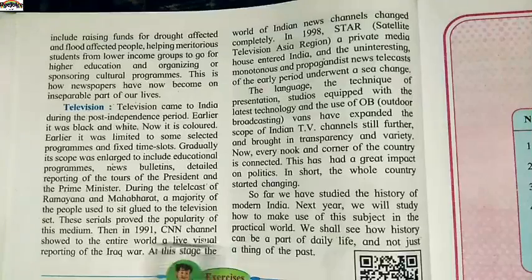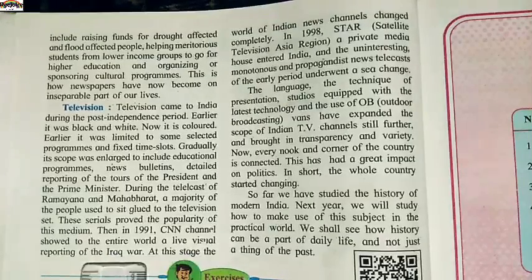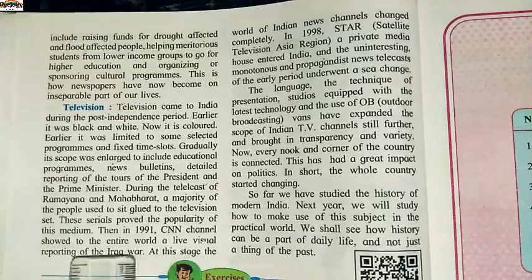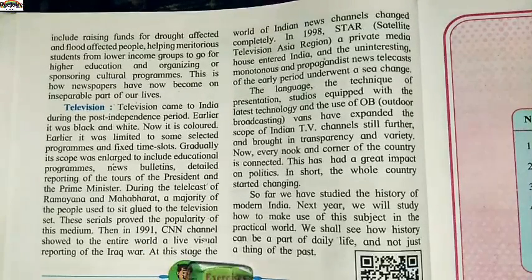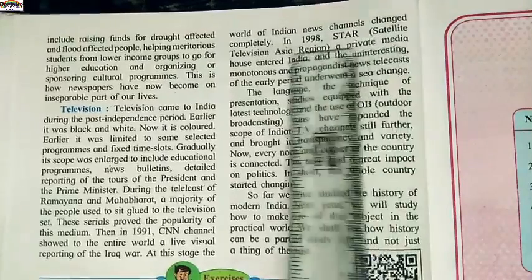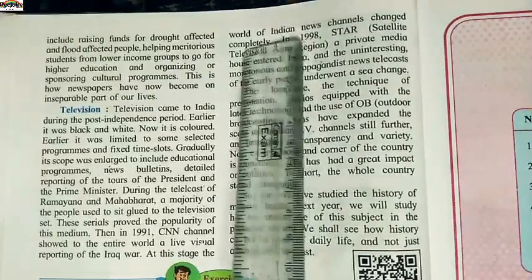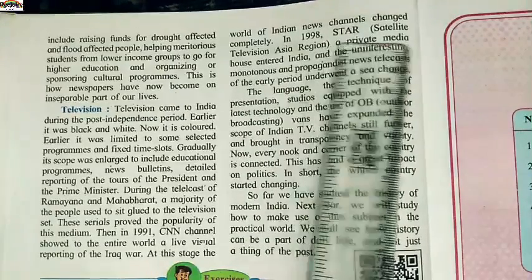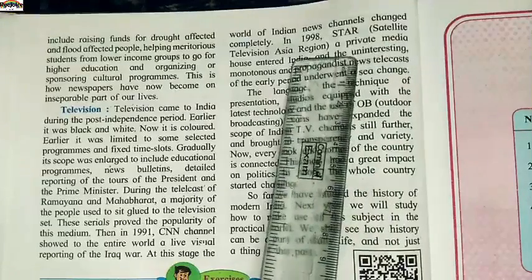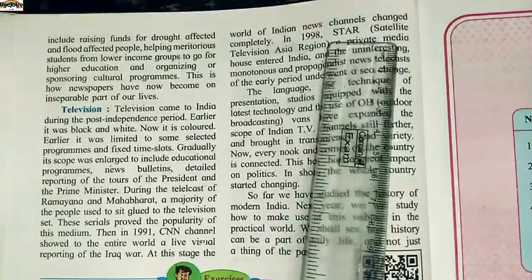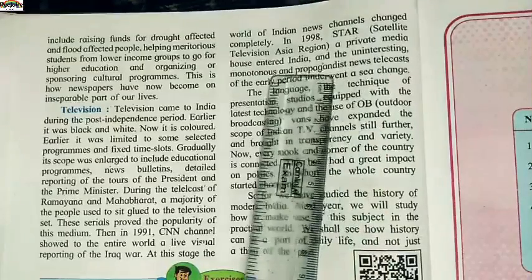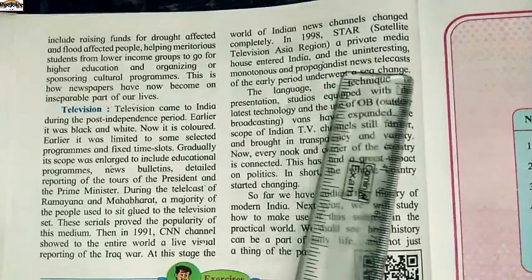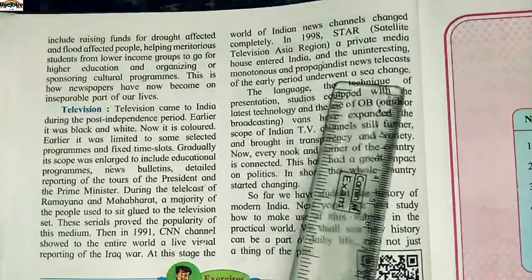Then in 1991, CNN channel showed the entire world the live visual reporting of the Iraq War. At this stage, the world of Indian news channels changed completely. In 1998, Star satellite television entered the Asian region and private media houses entered India. The uninteresting and propagandist news telecasts of the early period underwent a sea change.